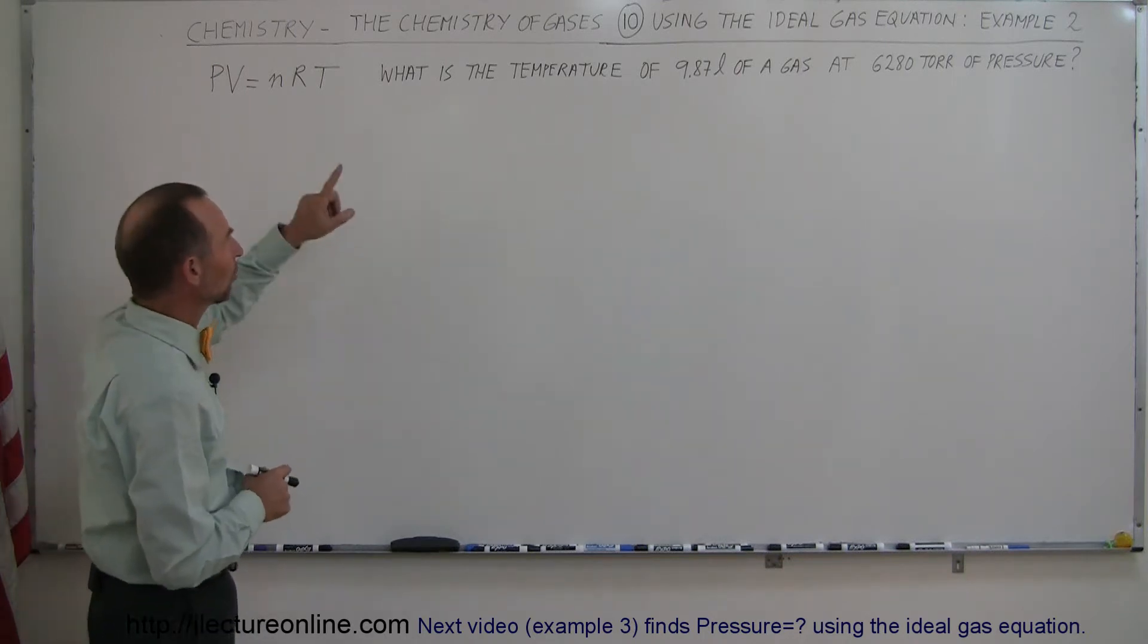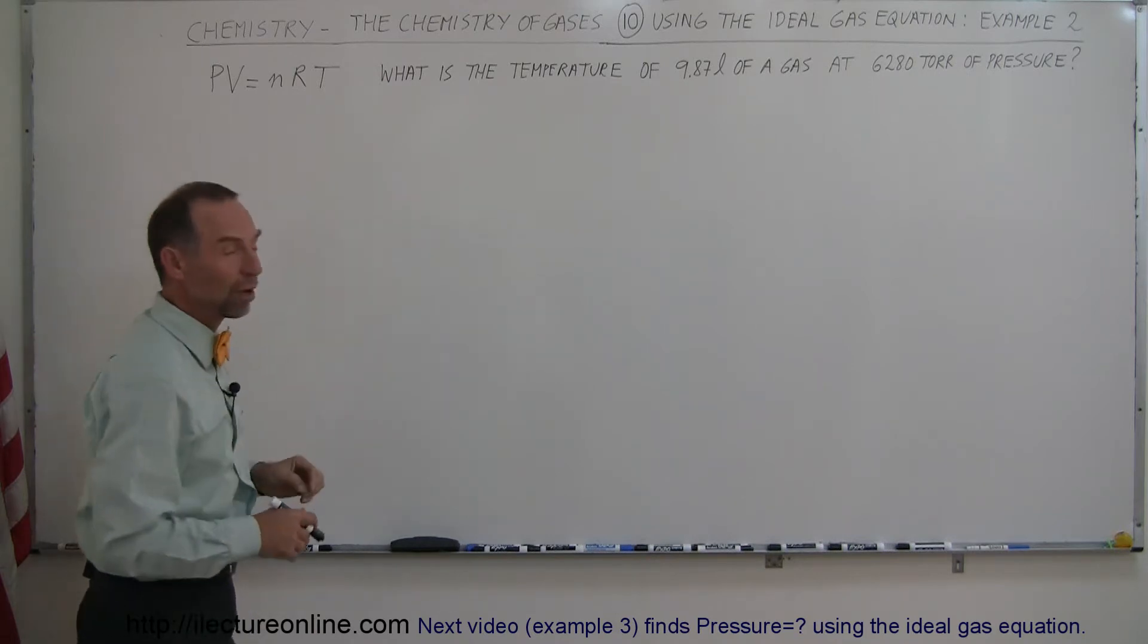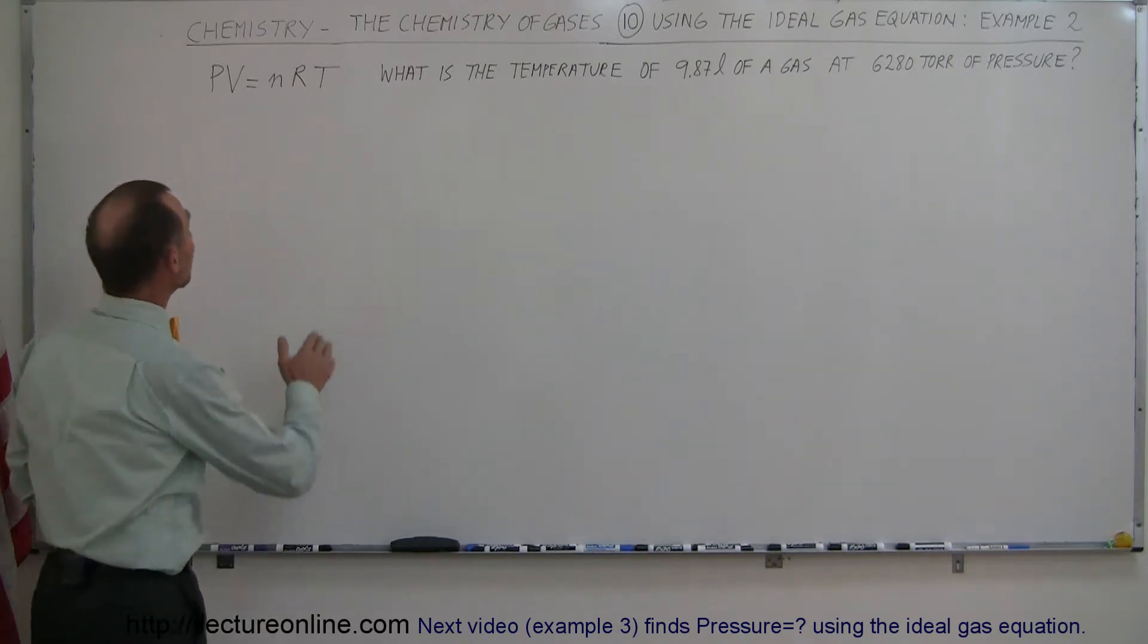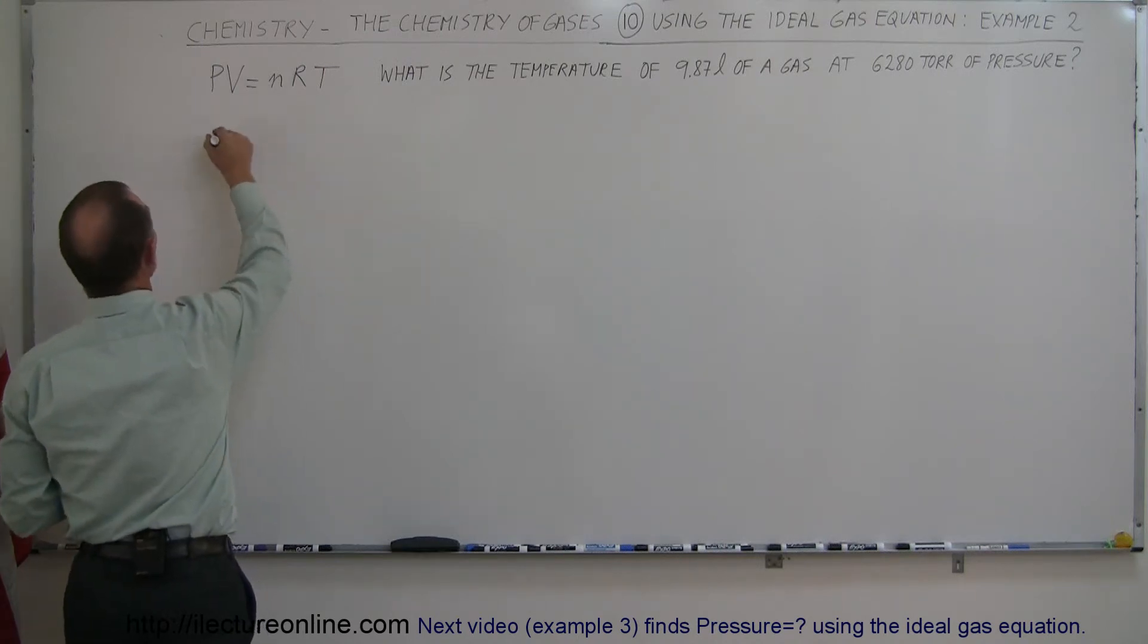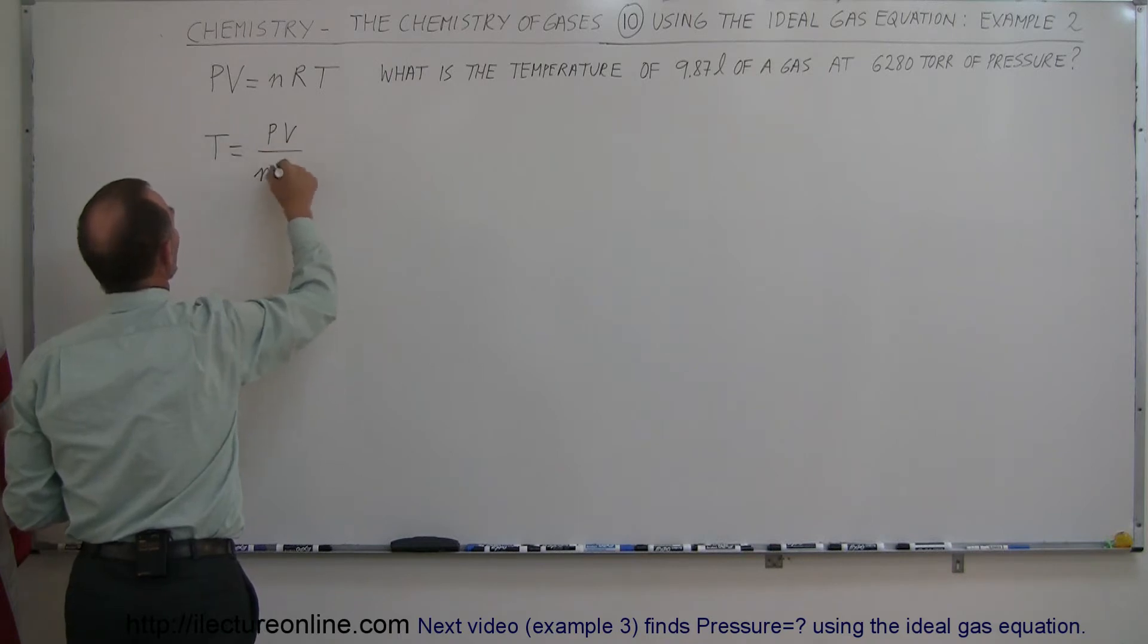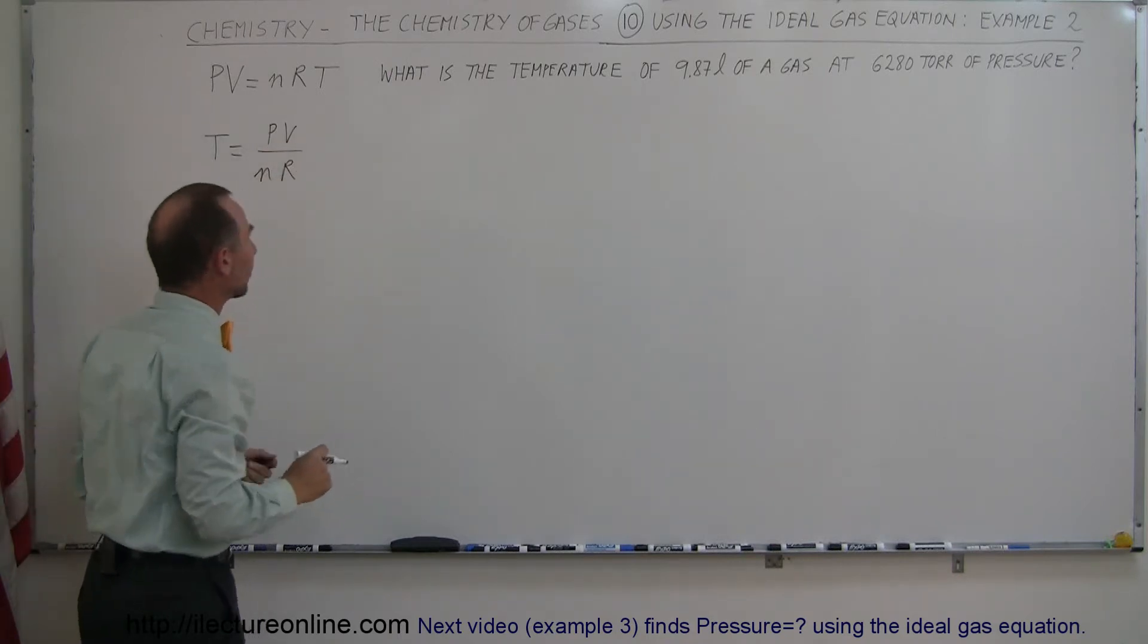They want to know the temperature, so let's take the ideal gas equation and solve that one for temperature first, which means divide both sides by NR and flip the equation around. That means the temperature is equal to the pressure times the volume divided by the number of moles times the constant, the gas constant.